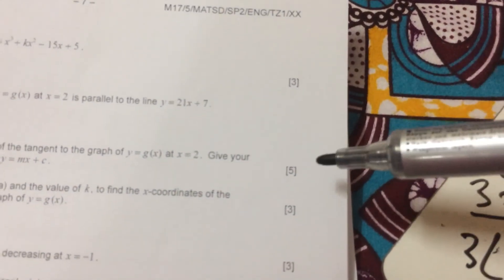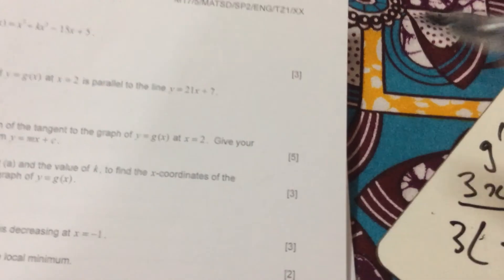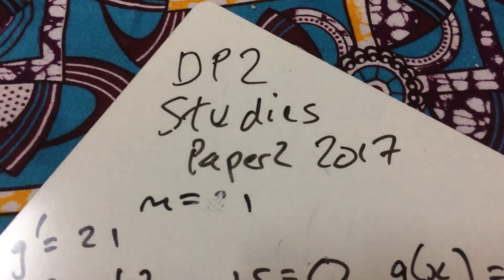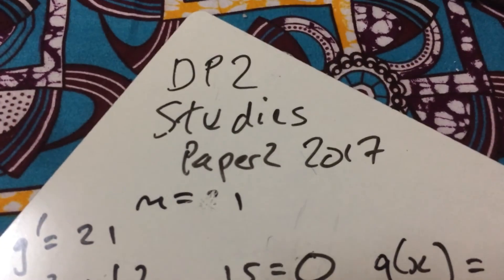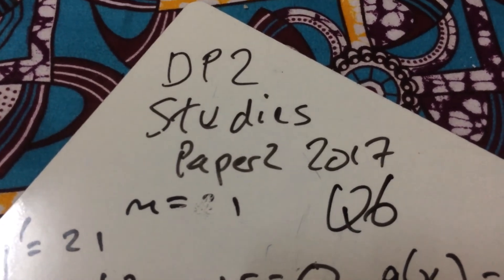That's worth quite a few marks in paper, too. 3 + 5 + 3 + 3 + 2. Add that all up, 16 marks. There we go. That's DP2, Math Studies, paper 2, question 6 from 2017. Thanks for watching. Don't forget to like, subscribe, and share.